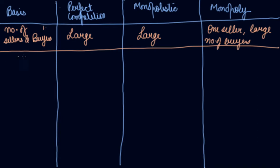Now the second difference we are doing is product: homogeneous product versus product differentiation.